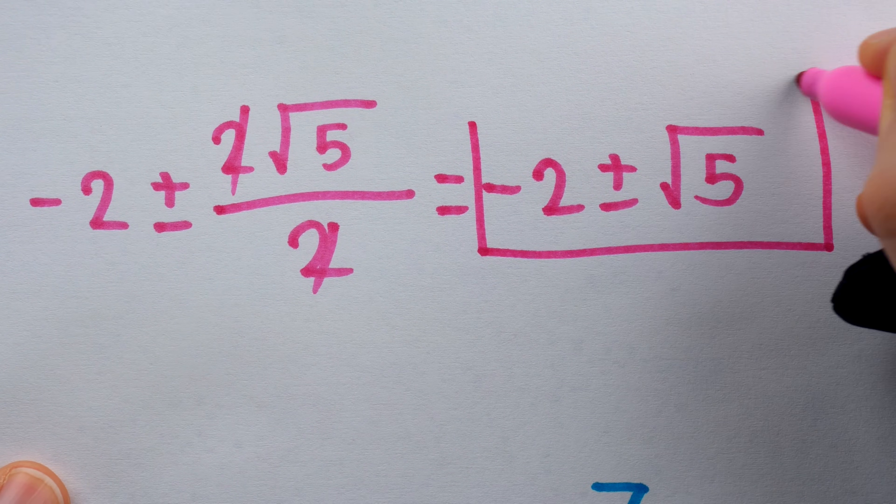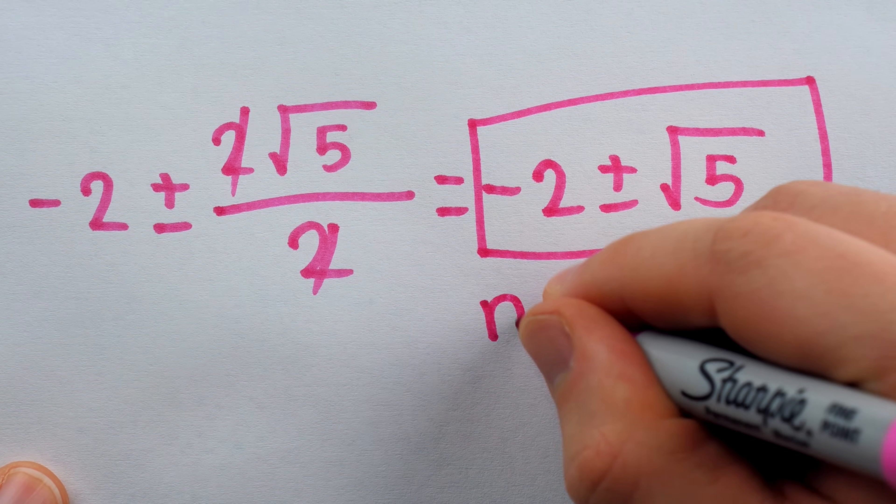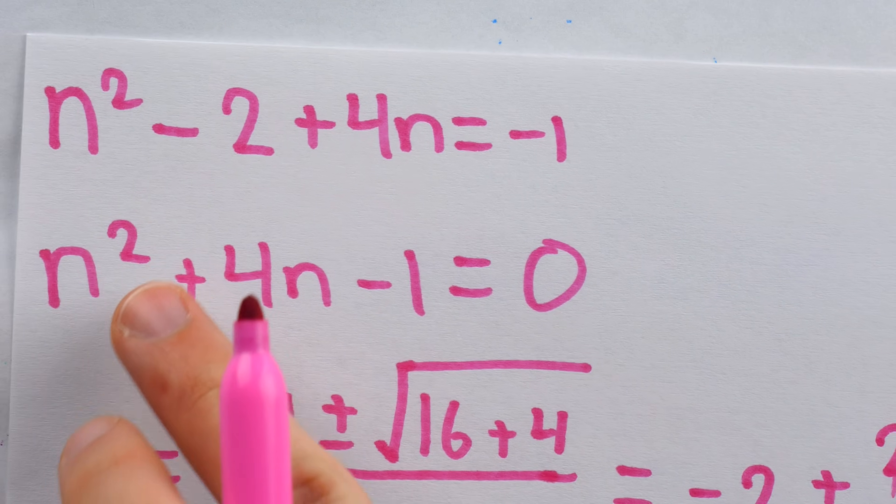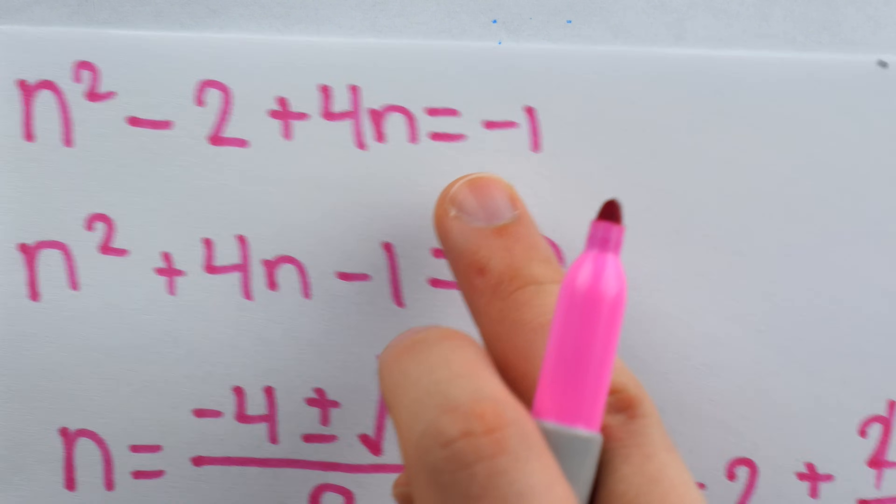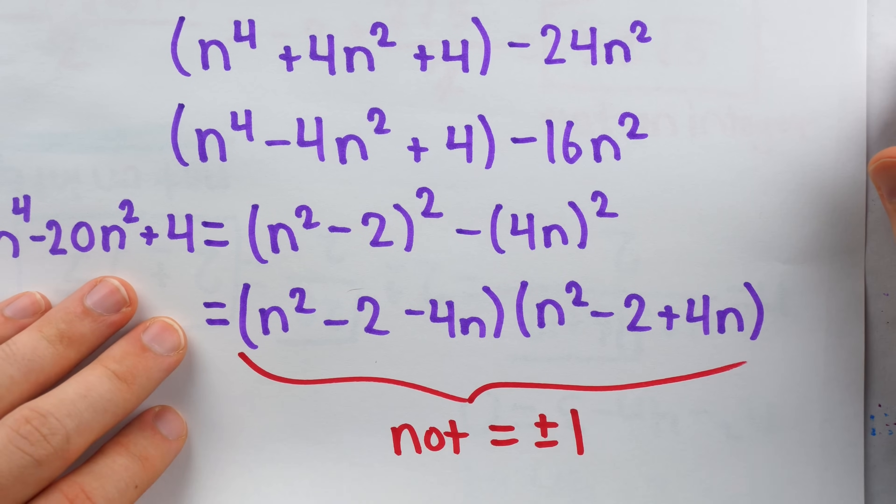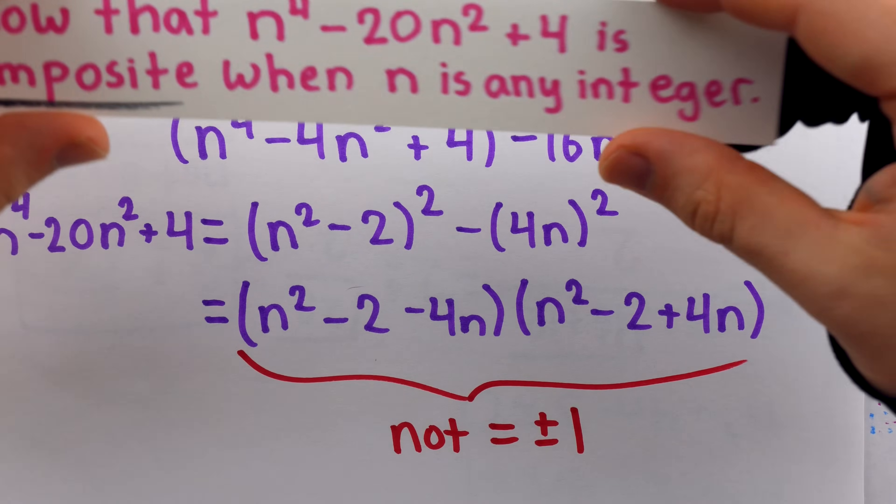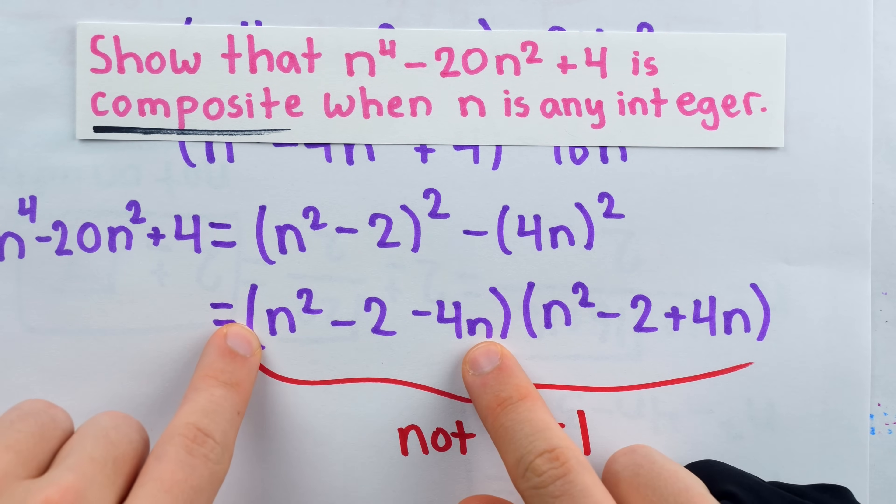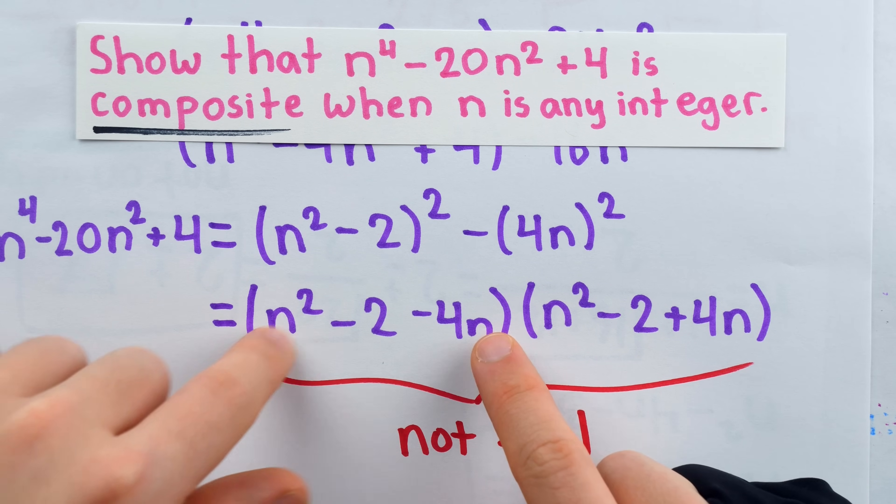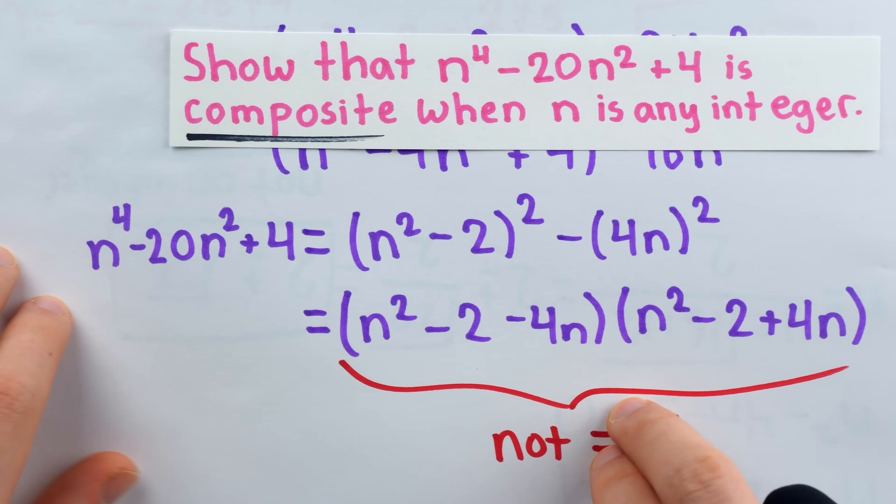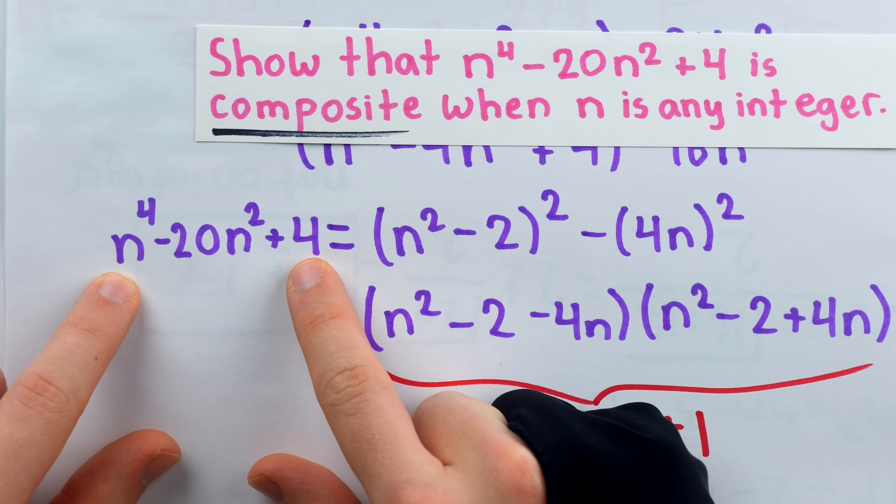And again, this can't be, because this is not an integer. So if n is an integer, then this factor absolutely can't be negative 1, because that would force n to not be an integer. And of course, the other two cases are similar. We've thus shown that whenever n is an integer, this polynomial can be written as this product of factors, where neither factor is plus or minus 1, which immediately implies the number must be composite.